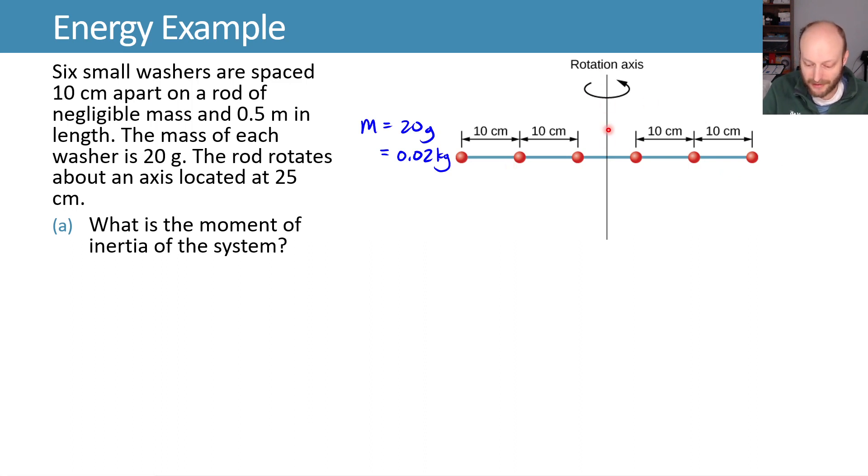We're rotating about an axis smack dab in the middle and we want to know what's the moment of inertia of this system. To do this we'll calculate our moment of inertia by summing up each mass times its distance away from the axis of rotation squared.